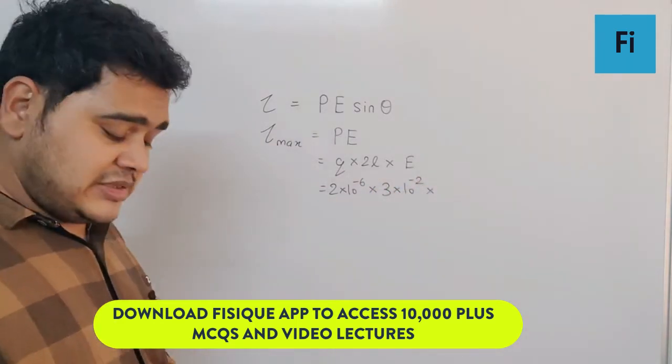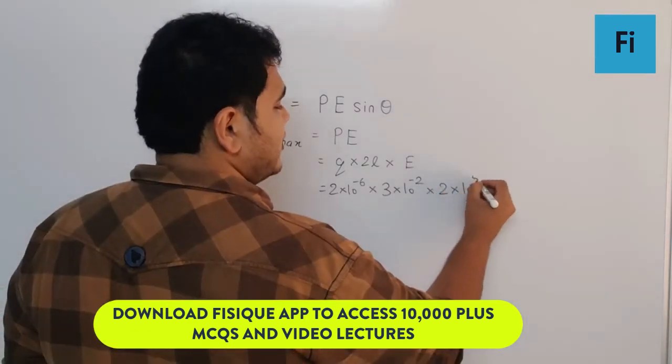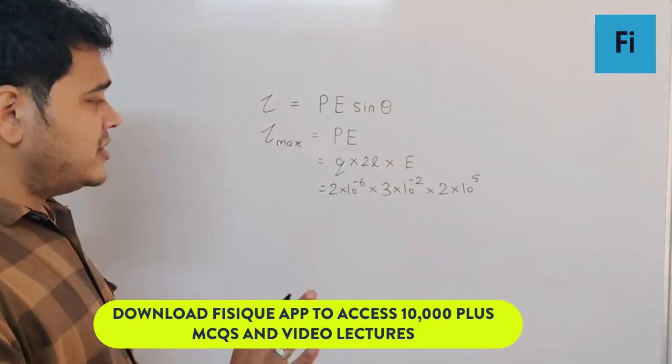And lastly, the electric field is given as 2×10^5. So now we've got the numbers, now we just need to calculate this.